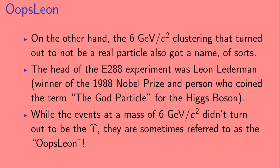On the other hand, the 6 GeV/c² clustering that turned out not to be a real particle also got a name of sorts. The head of the E288 experiment was Leon Lederman — you might have heard of him as the winner of the 1988 Nobel Prize, and the person who coined the term 'the God particle' for the Higgs boson. The false signal at 6 GeV/c² is sometimes referred to as the 'Oops-Leon.'